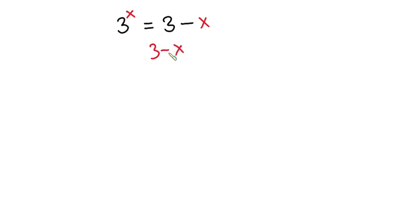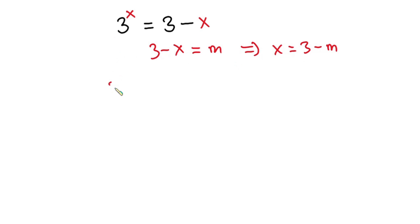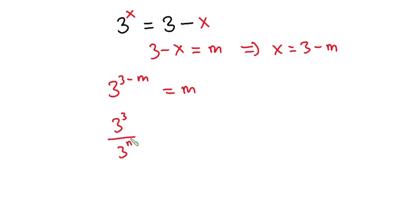First, I want to make things very simple, so I'll equate the right-hand side of the equation — which is 3 minus x — to another variable, say m. This implies that x is equal to 3 minus m. So the equation becomes 3 to the power (3 minus m) is equal to m. Considering the left-hand side, this can also be written as 3 to the third power divided by 3 to the power m, and this is equal to m.